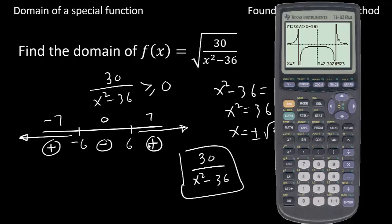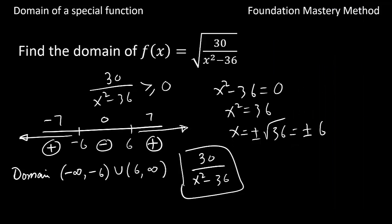So we have our domain from 6 to infinity and then negative infinity to negative 6. But these numbers are coming from the denominator, so we'll be using parentheses, not the bracket. So our domain is negative infinity to negative 6, and then 6 to infinity.